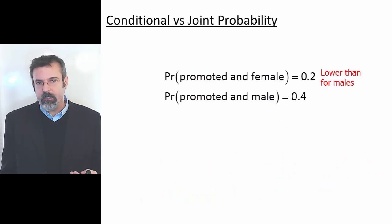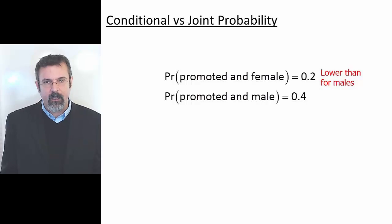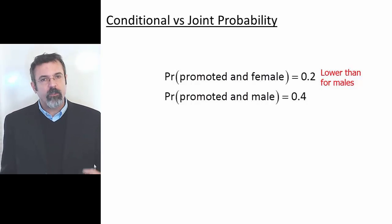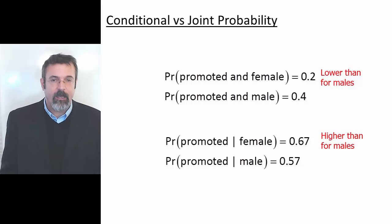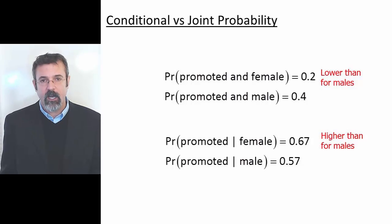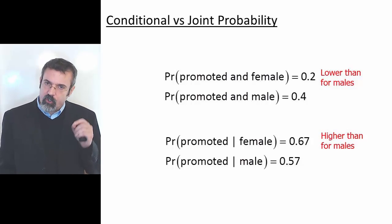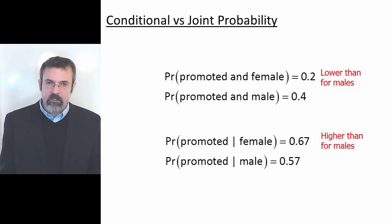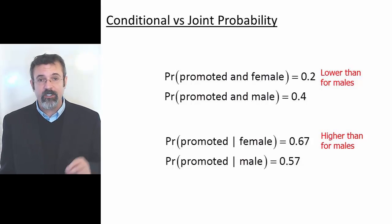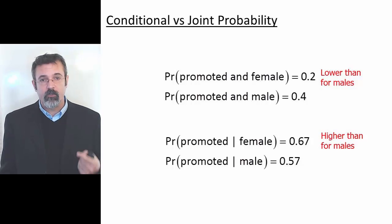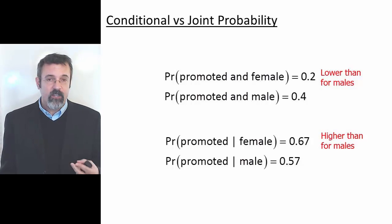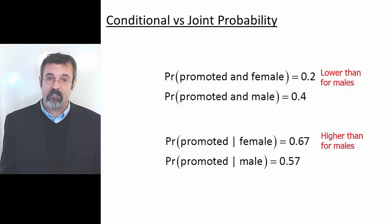So how is it that the probability of being promoted and female is relatively low, while the probability of being promoted given that you are female is relatively high? The answer is that the joint probability — the probability of being promoted and female — is influenced by two things: one is the number of females who are promoted, the other is the number of females that exist in the data set at all.